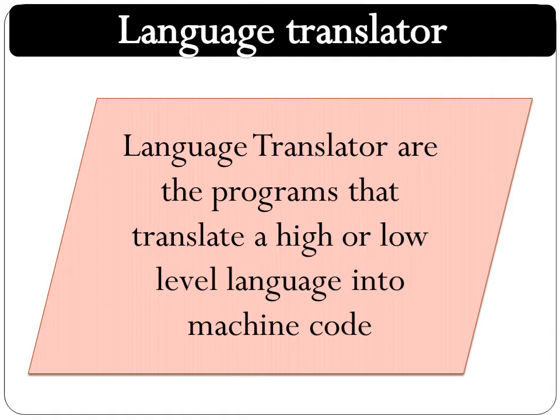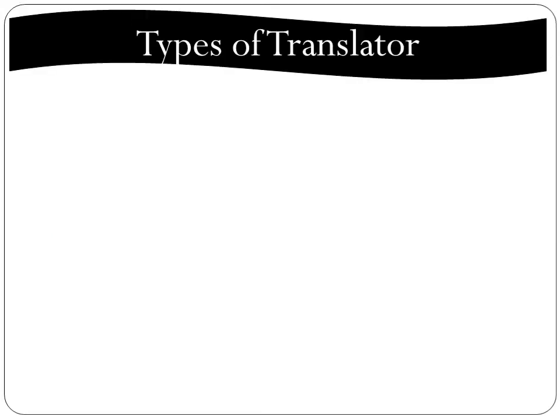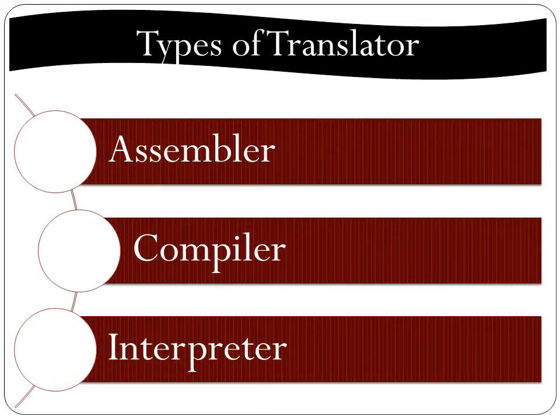The computer can understand and execute this type of data directly. That is why a program written in any language is first translated into machine code by using a language translator. Language translators are categorized into three main types which are named as assembler, compiler, and interpreter.